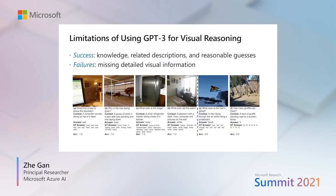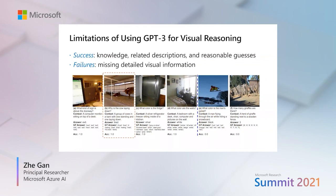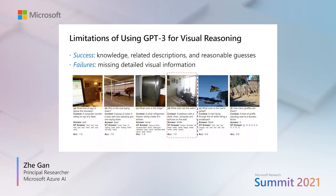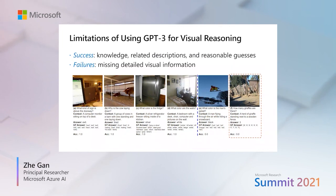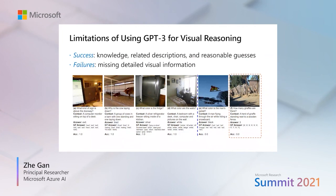To give a better sense of when it works and when it fails: GPT-3 can handle cases where the encoded knowledge combined with the generated captions is relevant to the question and allows a reasonable guess. But for failure cases — for example, when you ask 'how many giraffes are there?' — this is very challenging because the model does not have detailed visual information, just a simple caption.